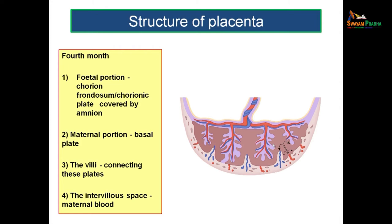When thinking about the placenta, consider: the surface facing the fetus is the chorionic plate covered by amnion; the surface related to the mother is the basal plate; and the structures traversing the placenta are the villi and the intervillus spaces between them, filled with maternal blood. The endometrial blood vessels — both arteries and veins — open into the intervillus space, filling it with blood.